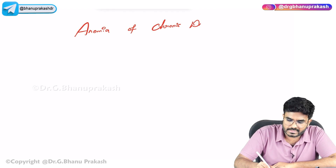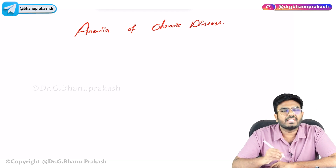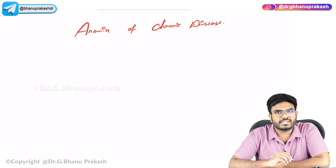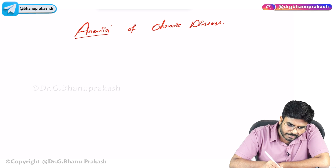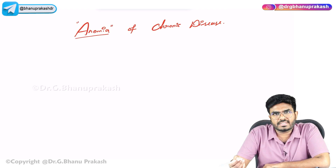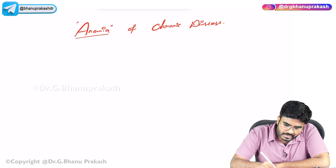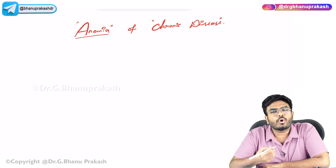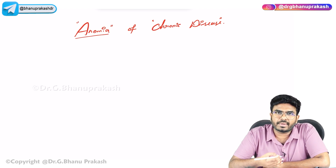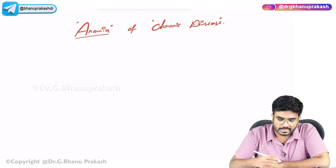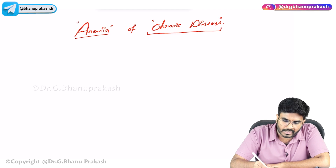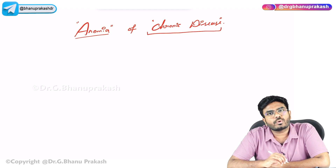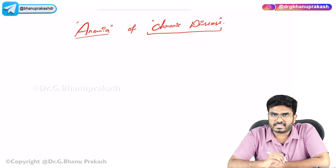Anemia of chronic disease — what exactly is it? As the name suggests, the patient is having anemia because of some chronic disease happening in the person, and that's what is causing the anemia. How it causes anemia, we will discuss.